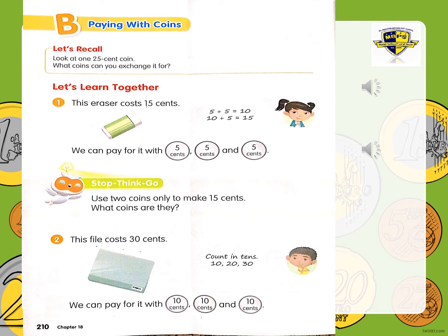Do it on your sheet of paper. Let's go to question number two. This file costs 30 cents. It says here, count in 10s. So we're going to count till 30: 10, 20, and 30. We want to make 30 cents. We can pay for it with three 10-cent coins. 10, 10, and 10 make 30. That's how we can pay. It's easy — you can do it.